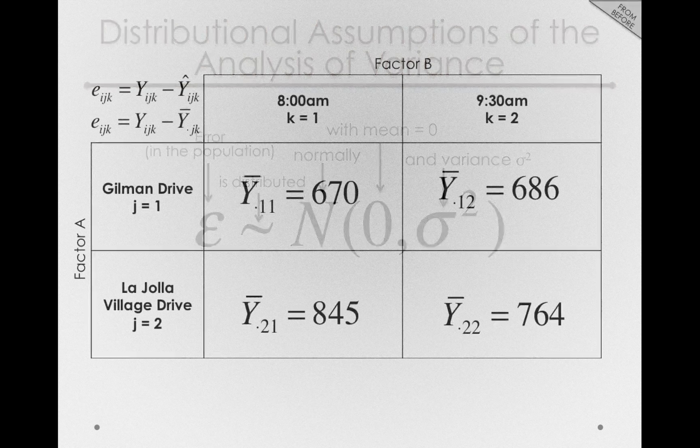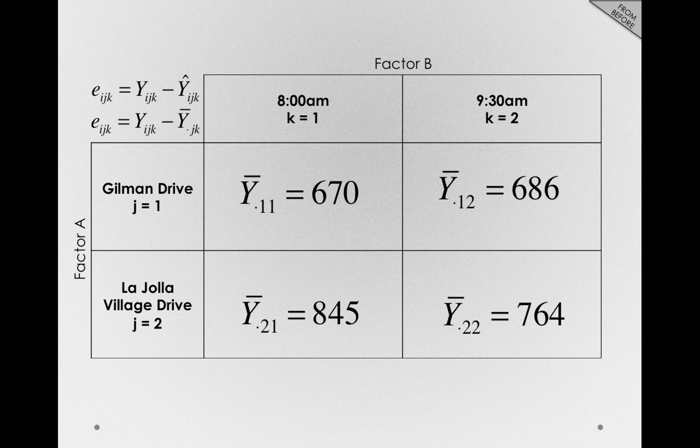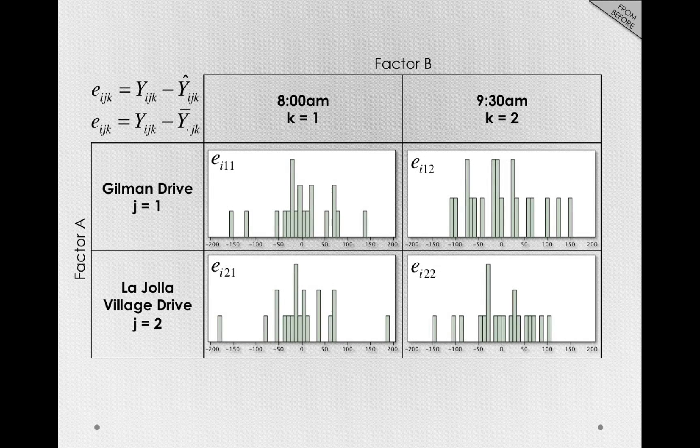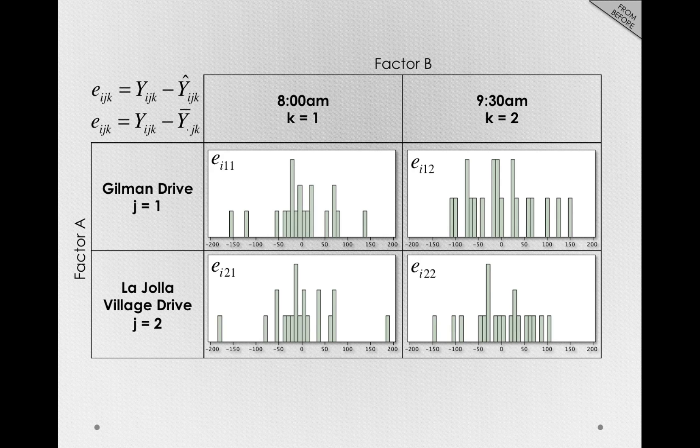In our sample estimates of the population, the way we'll get an insight into the population error is, of course, looking at the EIJKs. In our two-factor model, I showed you these. Within each combination of route and time of day, we had estimates of the epsilon terms.